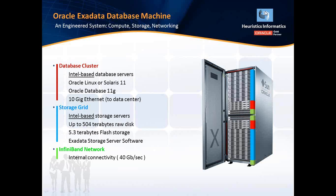The InfiniBand network, which is really one of the most critical pieces of the Exadata machine, is an internal 40 Gigabit network. So communication between the internal components of the database machine is extremely fast.